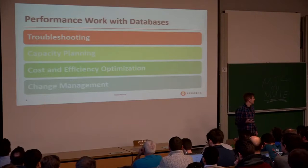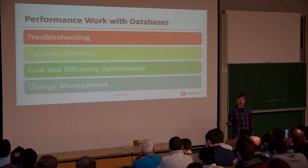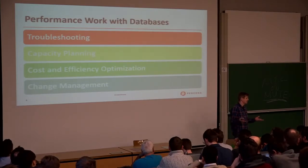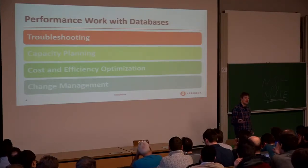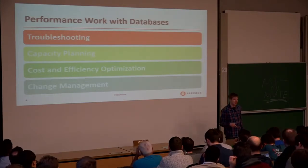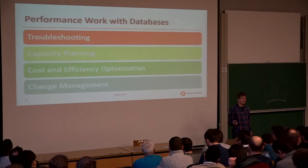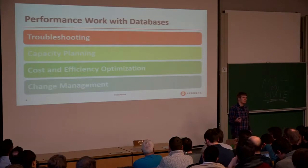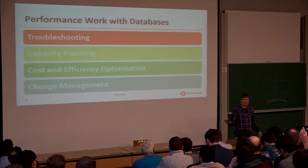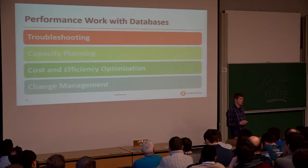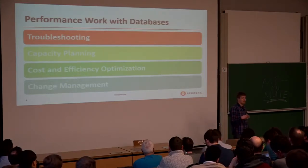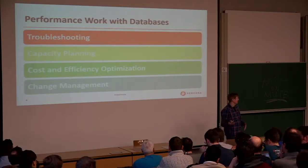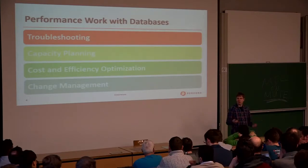If you look at performance work we typically do with a database, there are a few categories. Troubleshooting — the problem happens and you need to figure out what was fast or slow before. Often you also have to do capacity planning: understanding how much traffic and how much load the database can handle. And increasingly now, we have to do cost and efficiency optimizations, which is especially relevant in the cloud, where you can scale instances down and start saving money today. And also, change management — if you upgrade to the next database version, chances are something will go faster, something slower, and you need to figure it out.